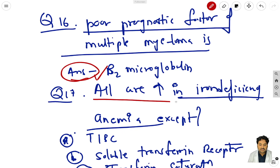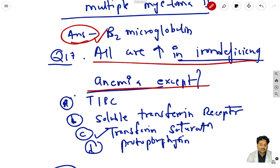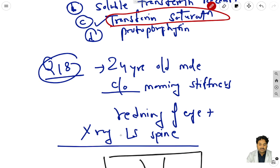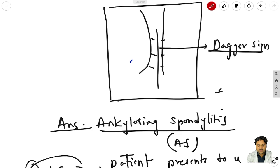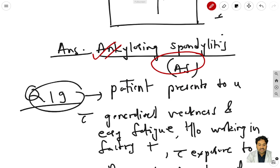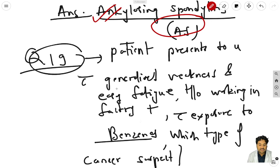Question 17: all are increased in iron deficiency anemia except - TIBC, soluble transferrin receptor, and transferrin are increased, but transferrin saturation will not increase. Question 18: a 24-year-old male complains of morning stiffness, redness of the eye, and X-ray of the lumbosacral spine shows a dagger sign - the answer is ankylosing spondylitis.